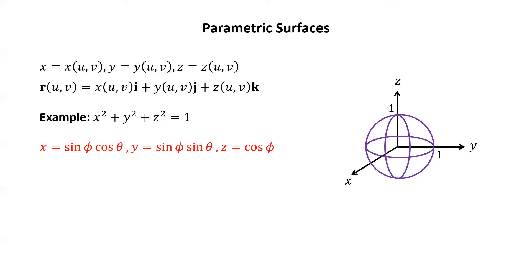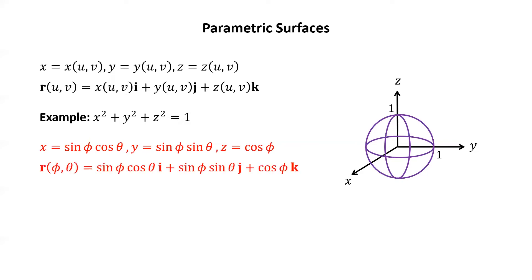We'll use spherical coordinates. Remember in spherical coordinates, x is rho sine phi cosine theta, but here rho is 1 because it's a sphere of radius 1, so the distance from the origin to any point on the sphere is always 1. Similarly, y is sine phi sine theta, and z is cosine phi. The corresponding vector-valued function is r of (phi, theta) equals sine phi cosine theta i plus sine phi sine theta j plus cosine phi k.